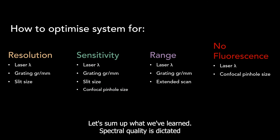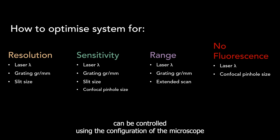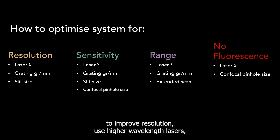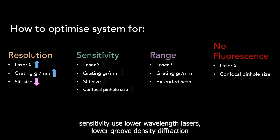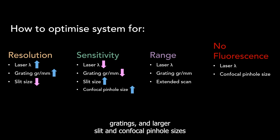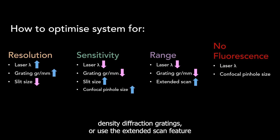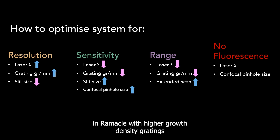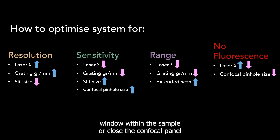Spectral quality is dictated by spectral resolution, sensitivity, range, and a lack of fluorescence backgrounds. Each of these parameters can be controlled using the configuration of the microscope. To improve resolution, use higher wavelength lasers, higher groove density diffraction gratings, and a smaller slit width. To enhance sensitivity, use lower wavelength lasers, lower groove density diffraction gratings, and larger slit and confocal pinhole sizes. To achieve the best range, use low wavelength lasers and low groove density diffraction gratings, or use the extended scan feature in Ramico with higher groove density gratings. To ensure the spectrum does not contain unwanted fluorescence, carefully select the laser wavelength to avoid the absorption window within the sample, or close the confocal pinhole to reduce emissions from outwith the focal volume.